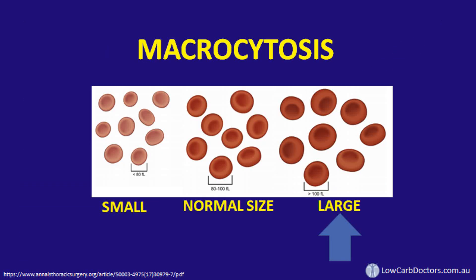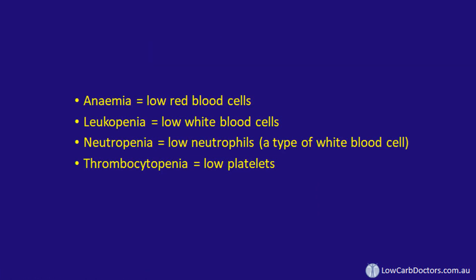One of the defining features of macrocytic anemias is that it's not just red blood cells that are affected, but all the cell lines are usually affected. So you can end up with low white cell count, neutropenia, low platelets or thrombocytopenia.